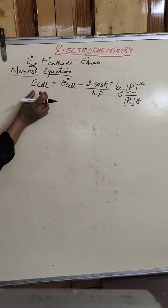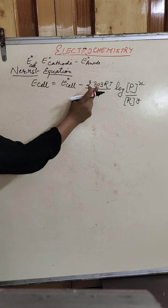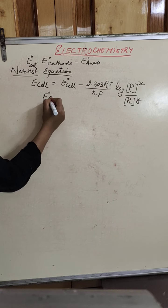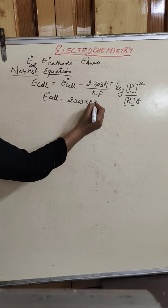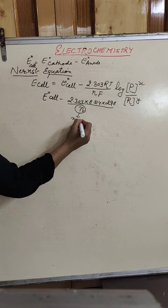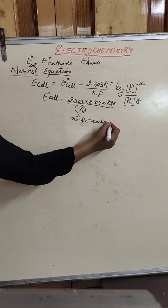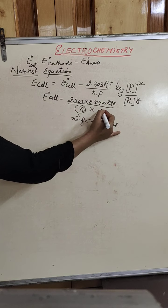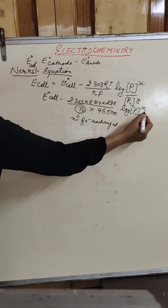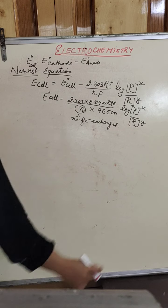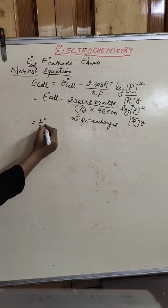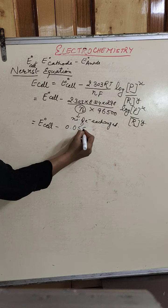Substituting the constants: R equals 8.314, temperature is room temperature 298 Kelvin, and F (Faraday's constant) is 96500 coulombs. N is a variable representing the number of electrons exchanged. When we substitute all these numbers and solve, the equation simplifies to: EMF of the cell equals E0 cell minus 0.0591 upon N, multiplied by the log term.